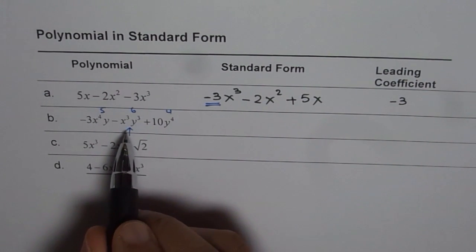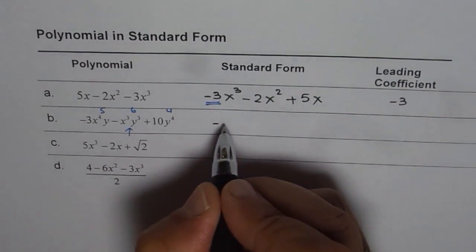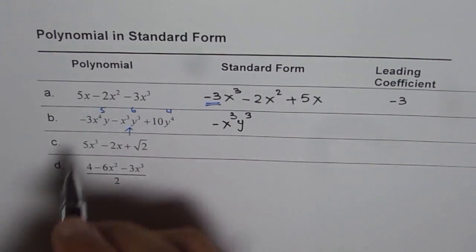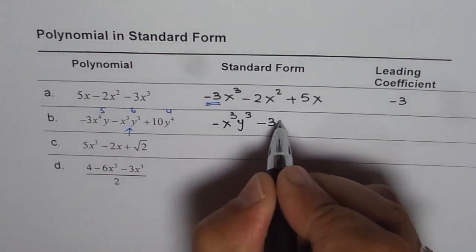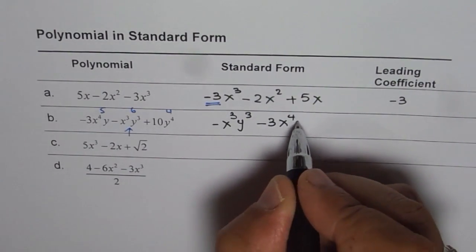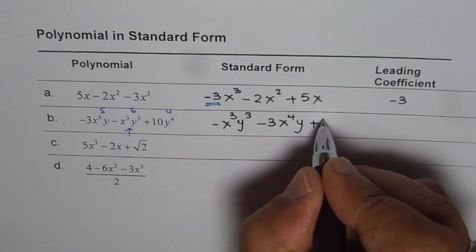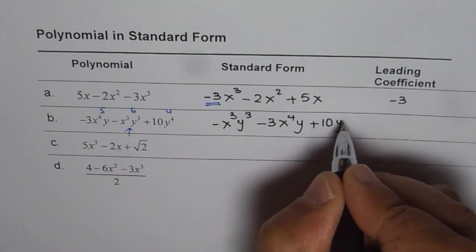Now the first term should be minus x cubed y cubed. The second term, degree 5, will be minus 3x to the power of 4 times y. And the last term in this trinomial will be 10y to the power of 4.